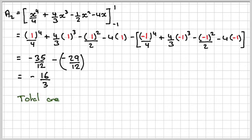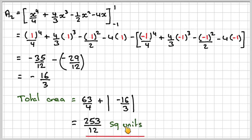Now to find the total area, we take the area of A1, which is 63 over 4, and take the absolute value of the one which is negative. So I ignore the minus sign and add them together, and we get a final answer of 253 over 12 square units.